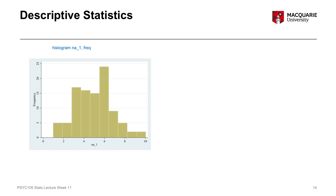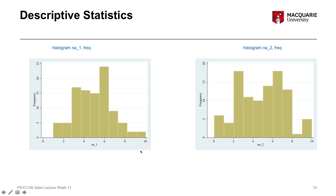Next we look at the distributions of negative affect. Negative affect 1 — expected negative affect, answered at the start of the experiment — shows a nice, normal-looking distribution, peaking around a score of 5, with scores ranging from just above 0 to 10. Similarly, negative affect 2 — actual experienced negative affect after the task — also shows a normal-ish bell curve distribution, with scores peaking around 4 to 6 and ranging from 0 to 10.